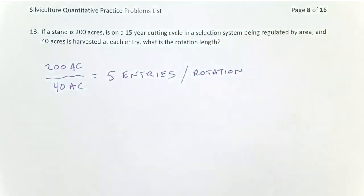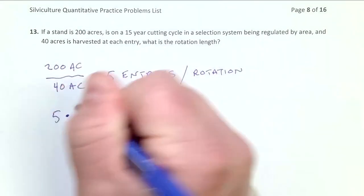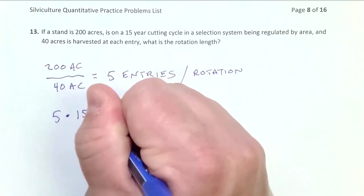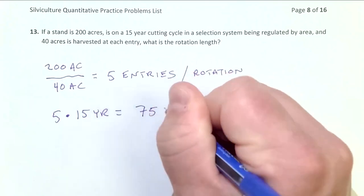Okay, and I know if I'm making five entries to get, you know, in theory, all my acreage harvested. It doesn't always work out like that in practice, but in theory. Five entries and each entry is coming across the 15 year cutting cycle. So that means my rotation length is 75 years.